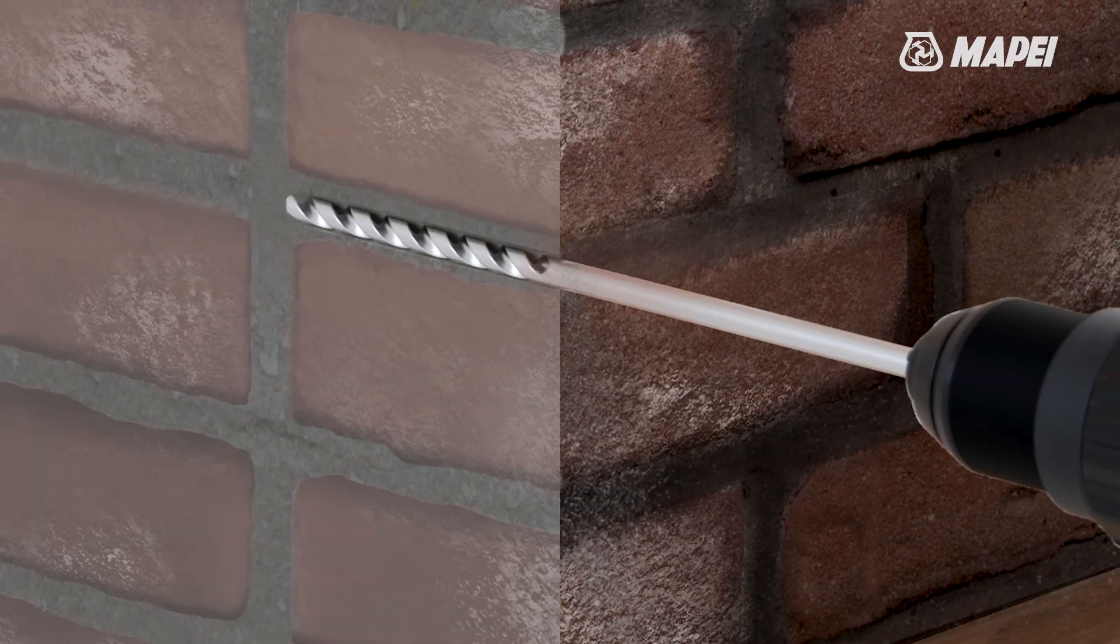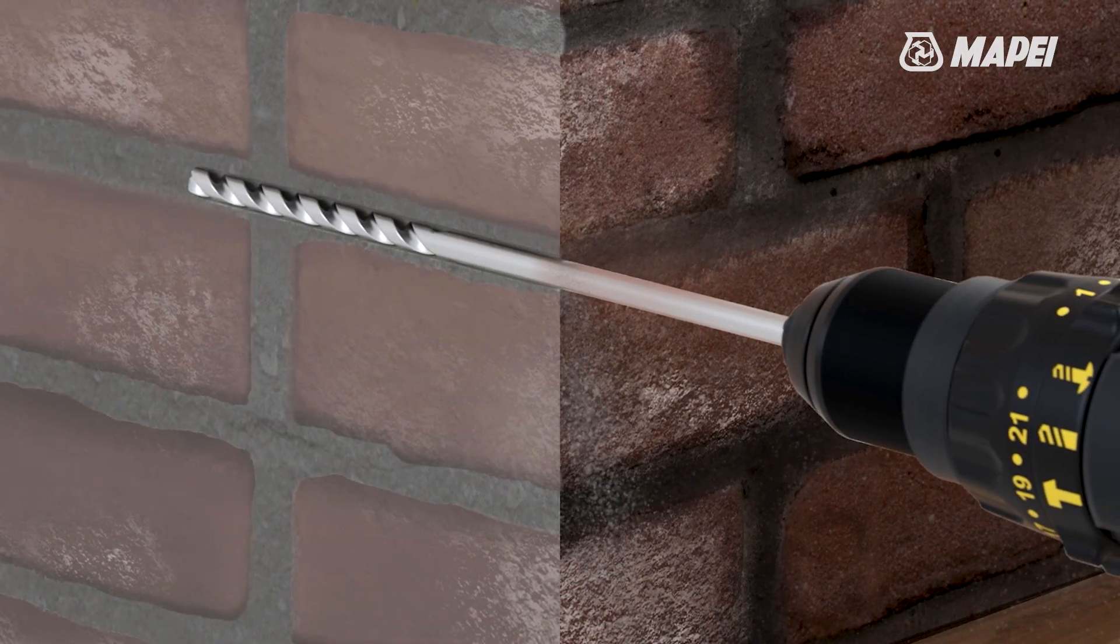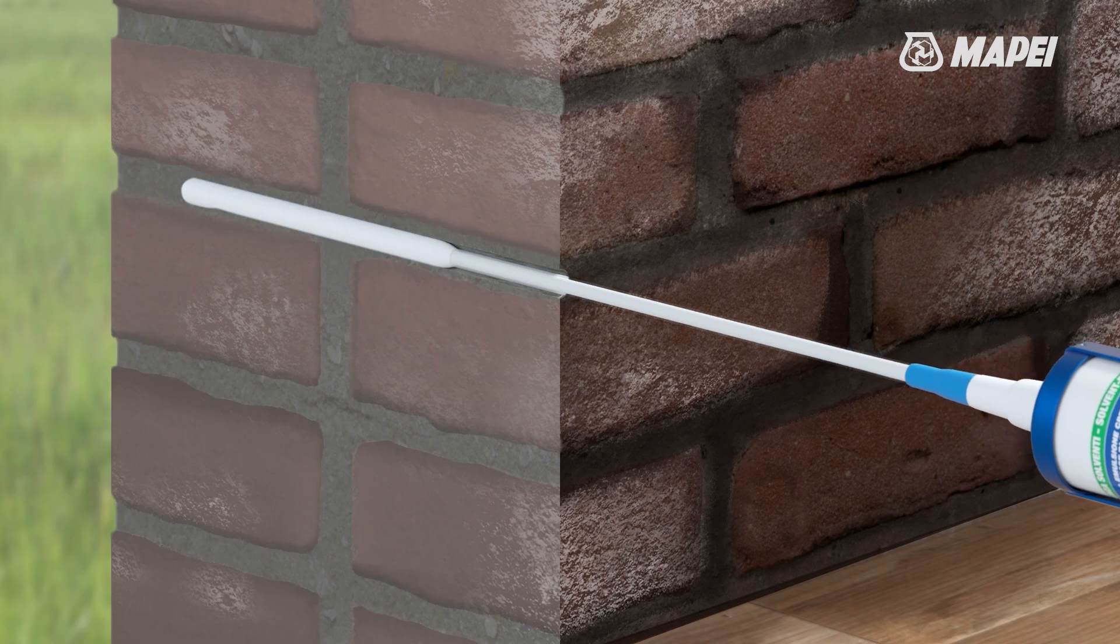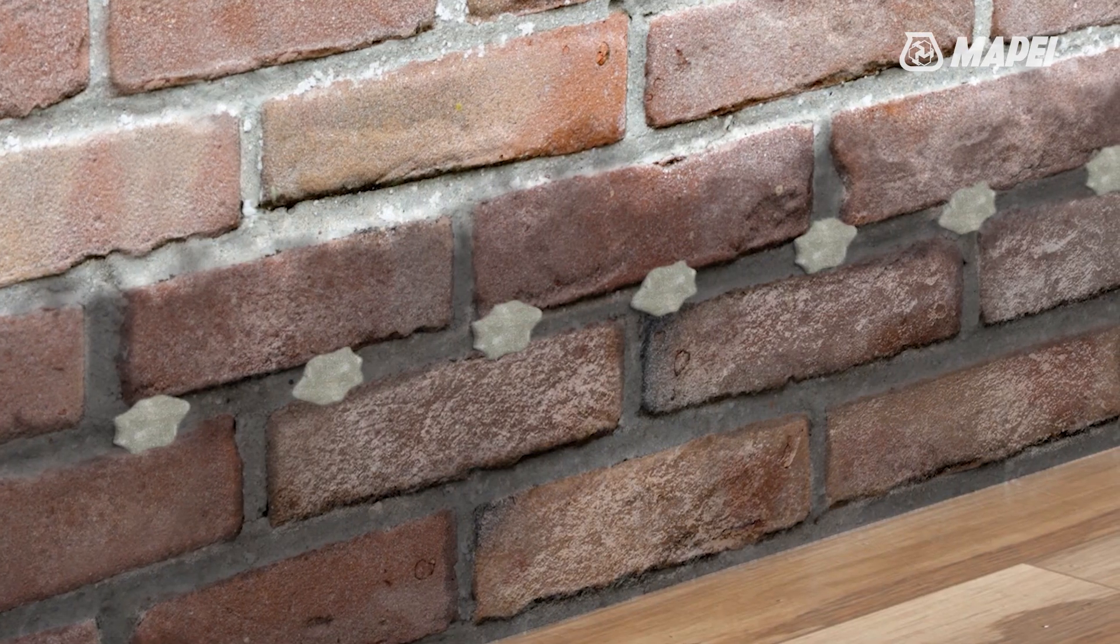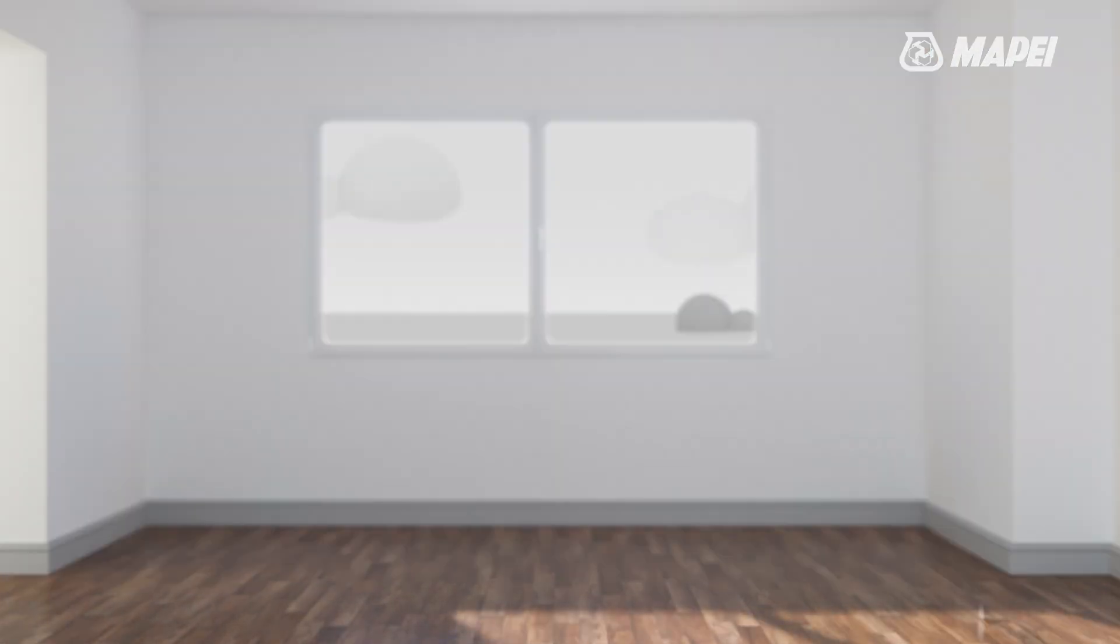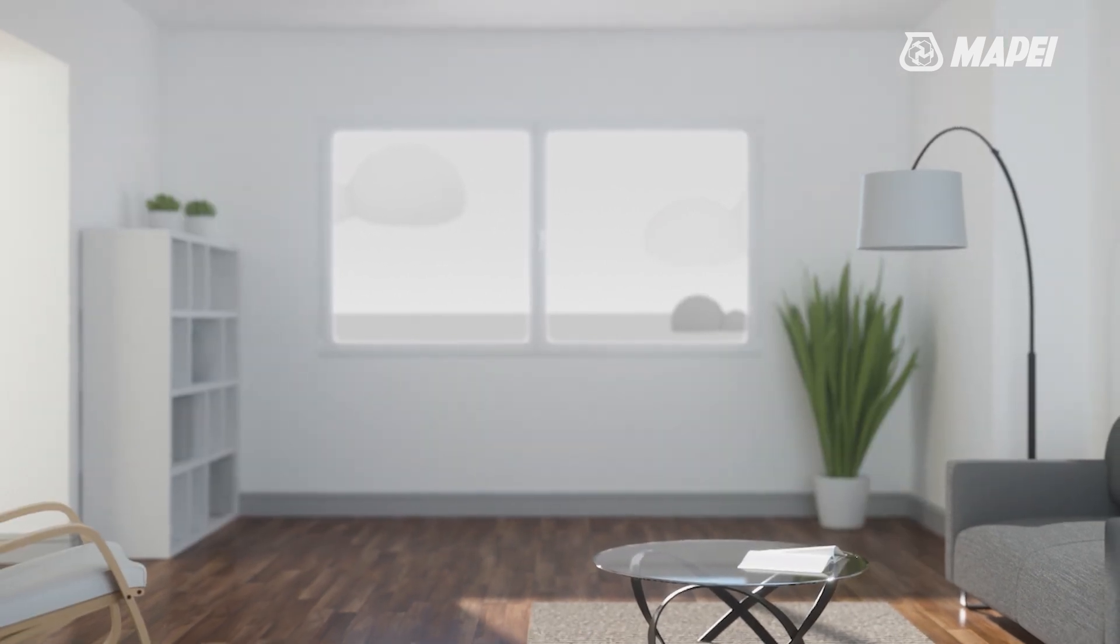The product is injected into holes drilled into the masonry. Once injected, it forms a horizontal water repellent barrier that counteracts rising water, promoting the drying of the masonry without compromising breathability.